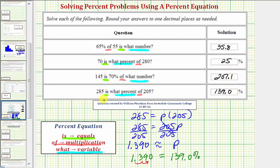285 is approximately 139 percent of 205. This does make sense because notice how 285 is more than 205, and therefore it would be more than 100 percent of 205.